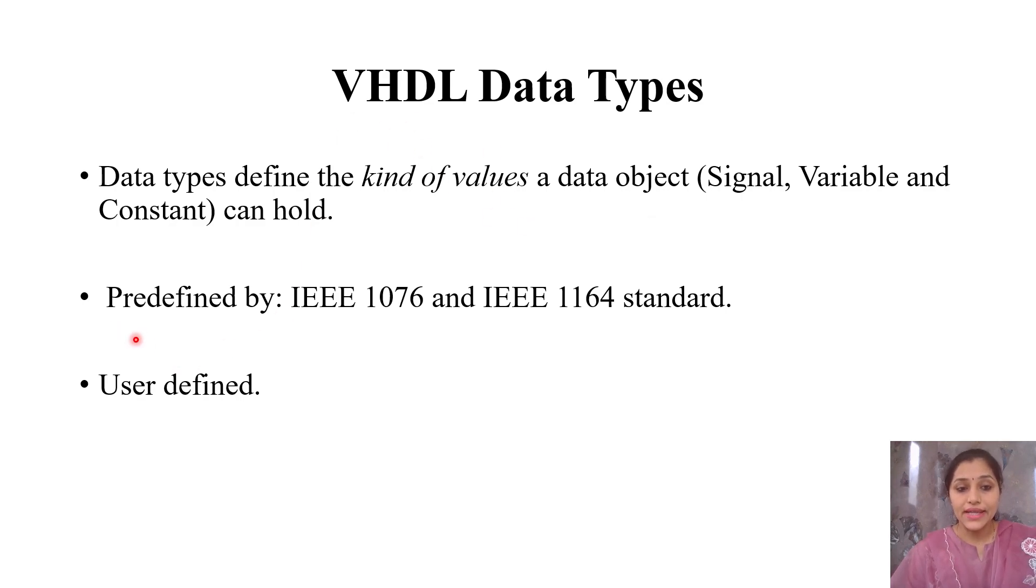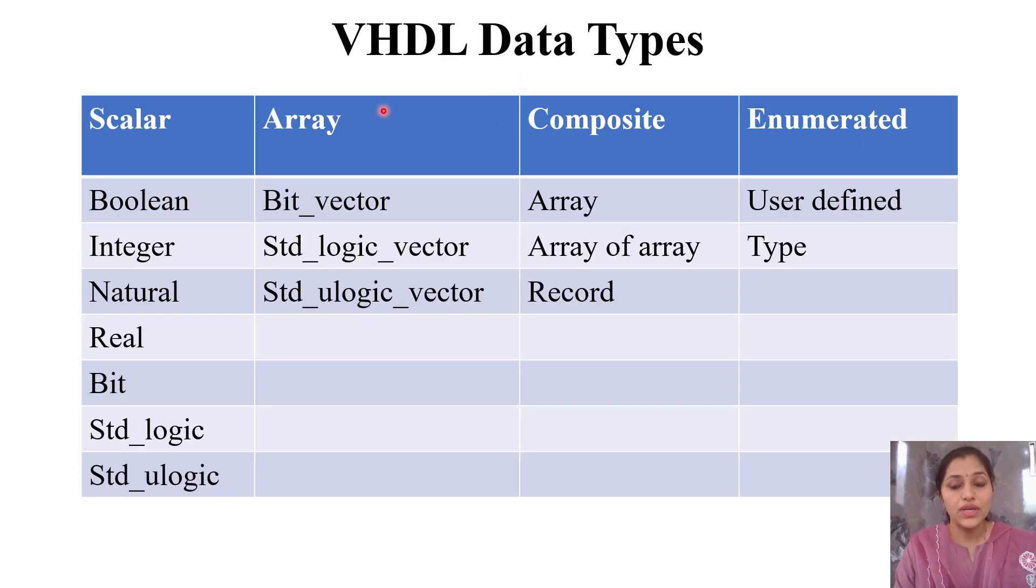The predefined data types are defined by IEEE 1076 and IEEE 1164 standards. VHDL data types are divided into four categories: scalar, array, composite, and enumerated. Scalar data types include Boolean, integer, natural, real, bit, standard logic, and standard U logic. We generally use standard logic while writing VHDL code.